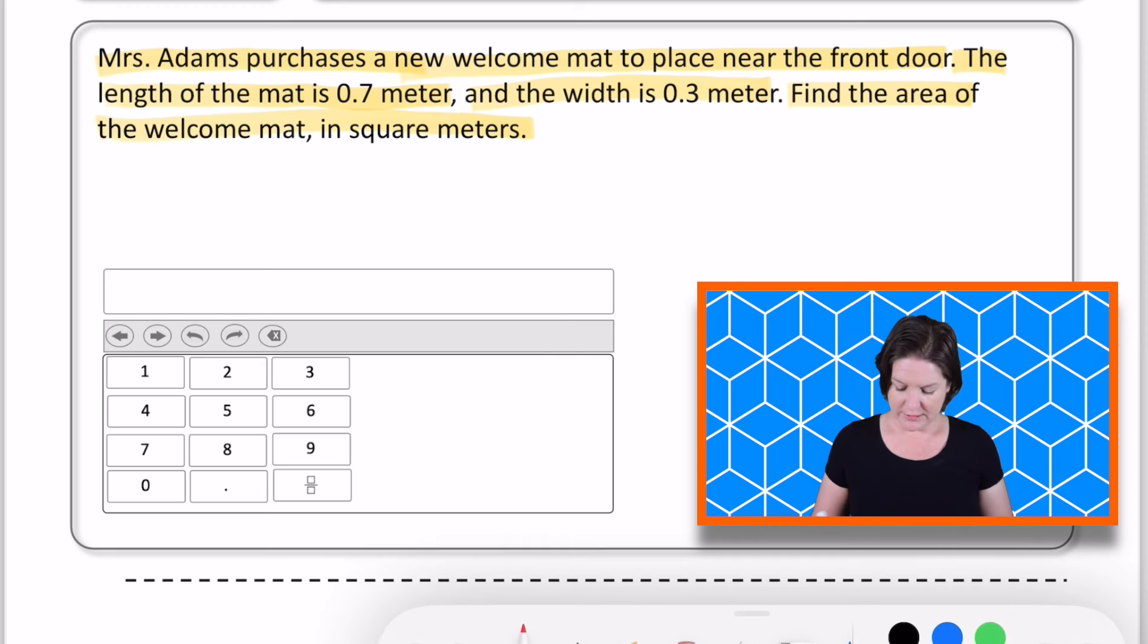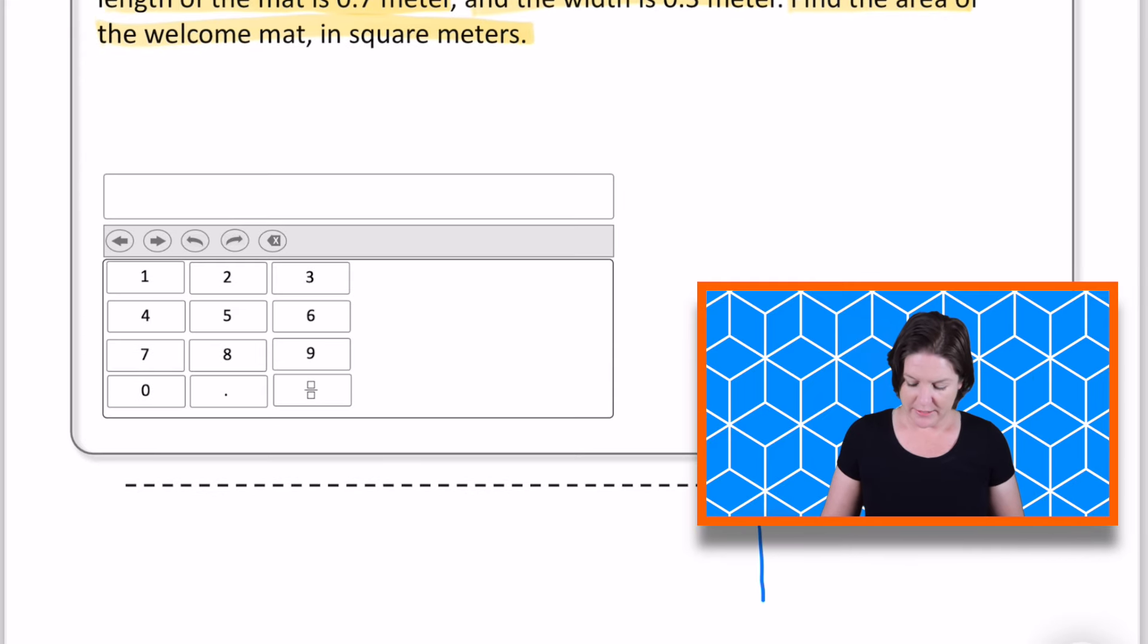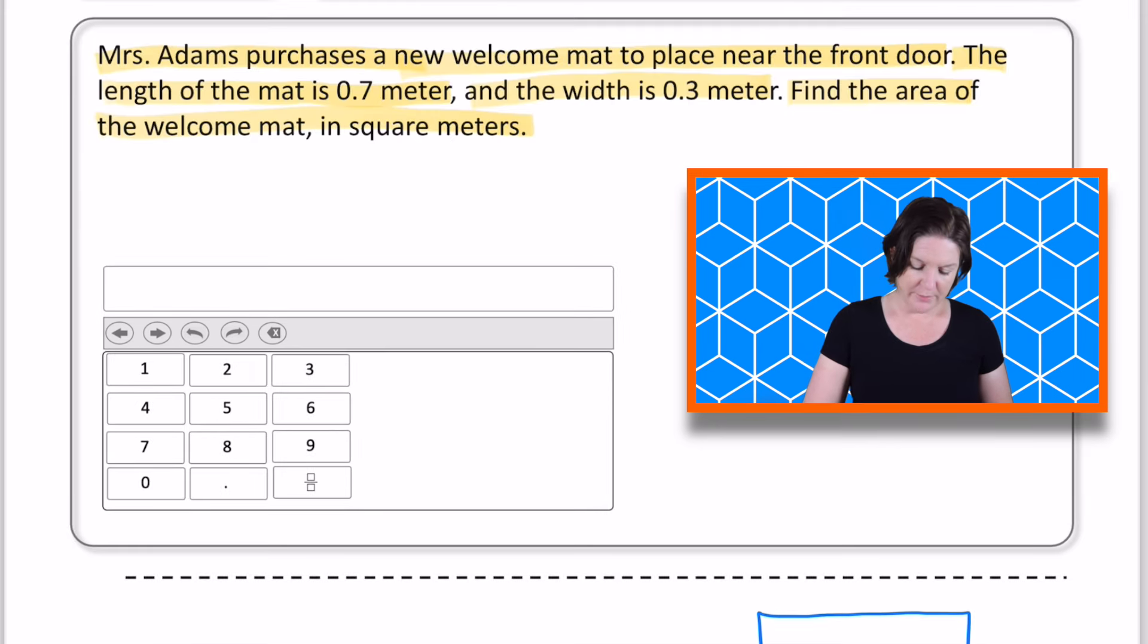So I'm going to model this real quick down here with a drawing. So she has a welcome mat. For your copy, I'm going to go ahead and add where it says purchases a new rectangular welcome mat. I'll add that little bit there because that should be included. So that way, you know, it's in the shape of a rectangle.